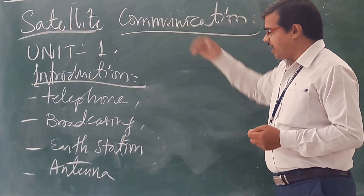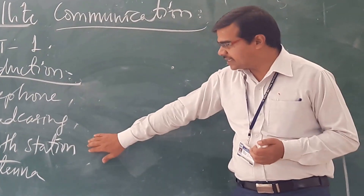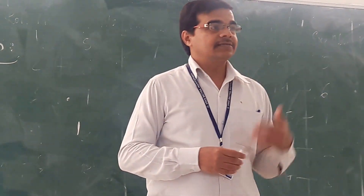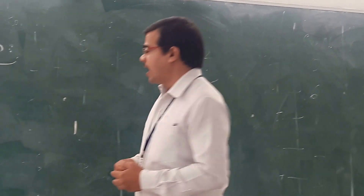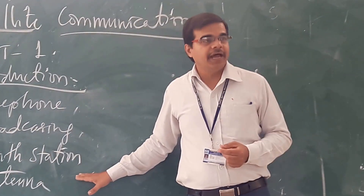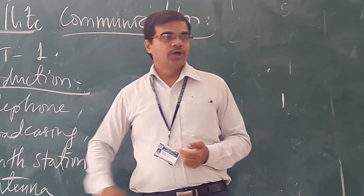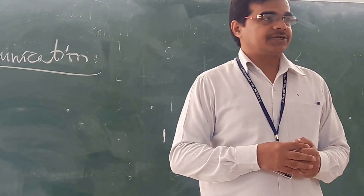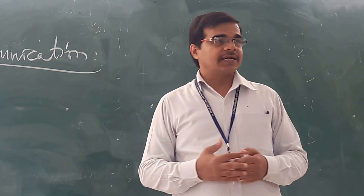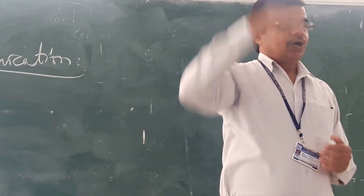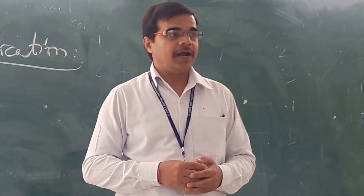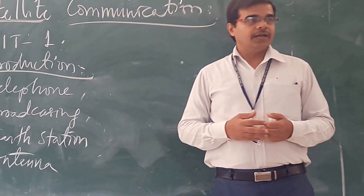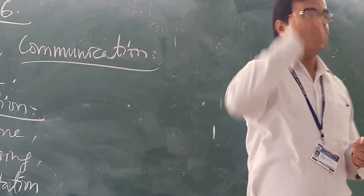In satellite communication, there is one basic component that is called the earth station. The name itself suggests it is the station which is there on the earth. You will have multiple earth stations and the satellite will be in space. The signal is to be transmitted from the earth station and that will be received by the satellite.